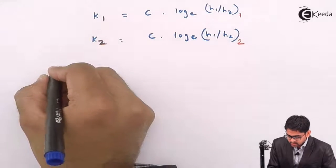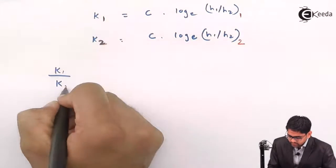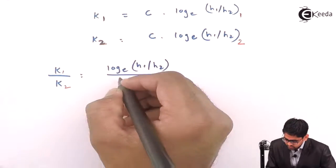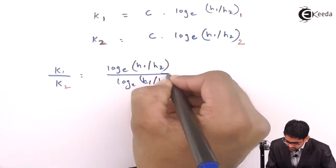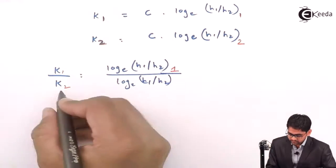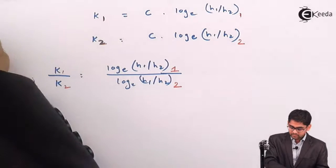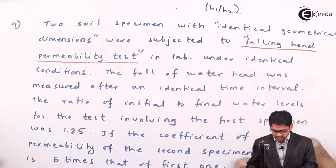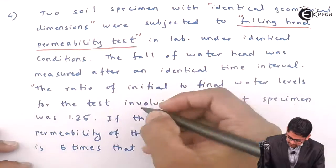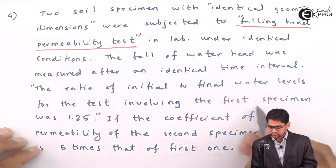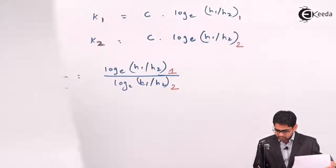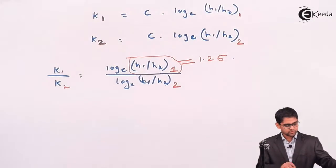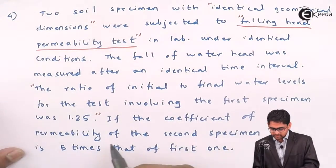Taking the ratio k1/k2, the constant C cancels out, giving: k1/k2 = ln(h1/h2)₁ divided by ln(h1/h2)₂. From the problem, h1/h2 for the first specimen is 1.25, and k2 equals five times k1, so k1/k2 equals 1/5, which is 0.2.